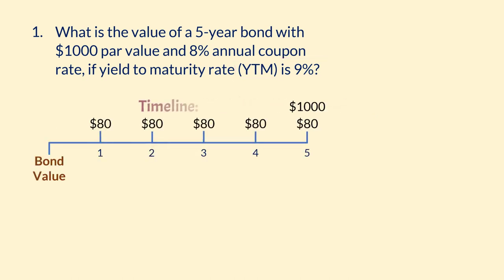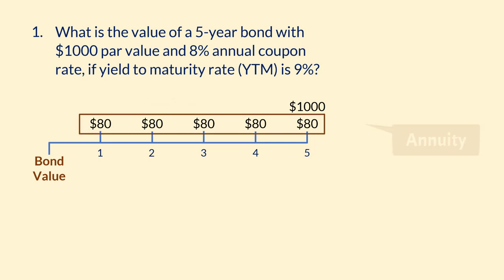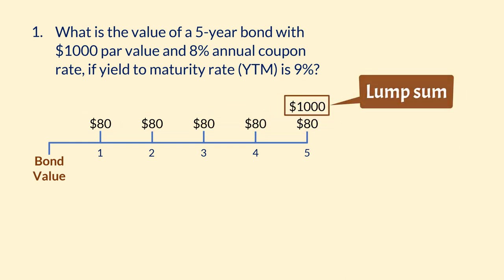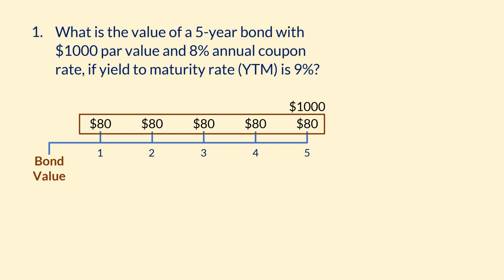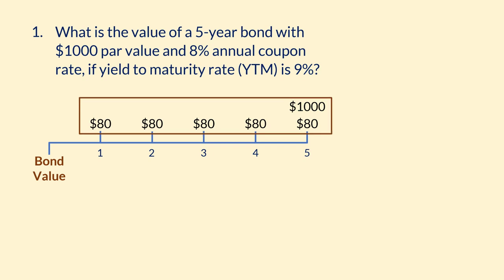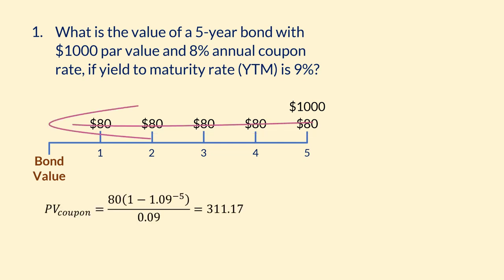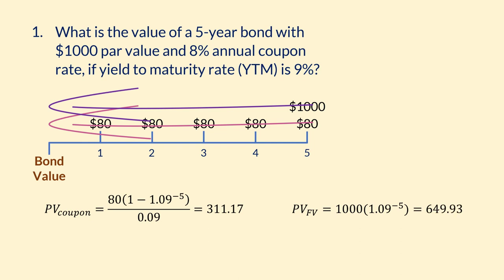This timeline shows the two different cash flows for the bond. One is the $80 annual payment, which is an annuity. The other is the $1,000 lump sum at maturity. The lender will receive $80 each of the 5 years and also receive the $1,000 face value in year 5. The bond value is the present value of the $80 coupons plus the present value of the $1,000 par or face value.